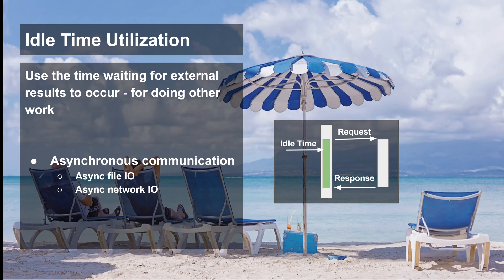The seventh principle is idle time utilization — use the time waiting for external results to occur for doing other work. As illustrated here, a thread inside our system sends a request to an external system. While the external system is preparing the response, this internal thread is idle — the green block represents idle time. This is exactly what you are trying to address when using asynchronous communication, such as asynchronous file I/O or asynchronous network I/O: send the request, go do something else, and come back when the response has returned.